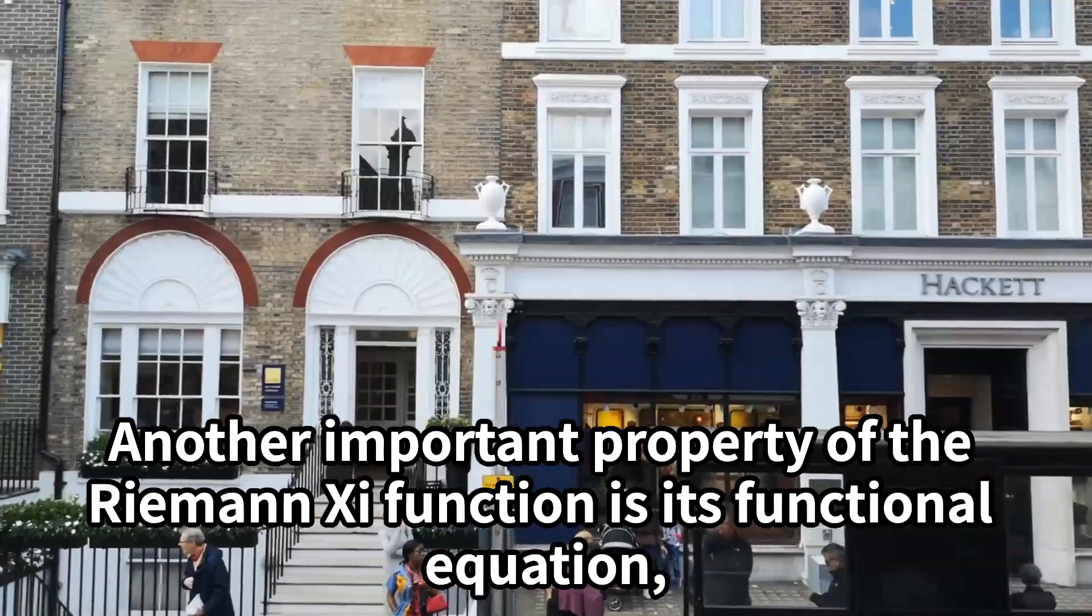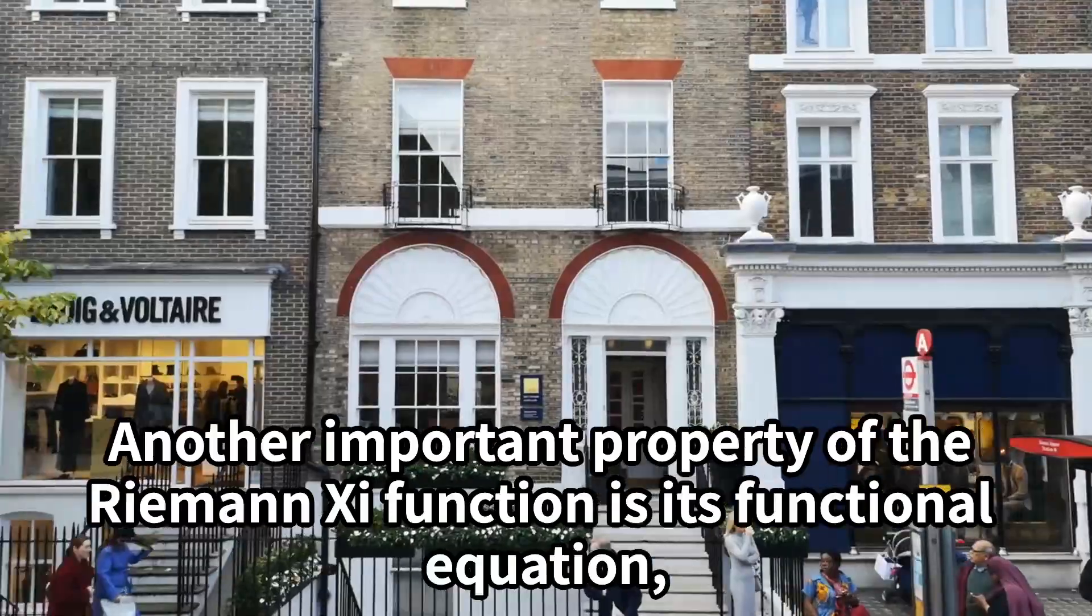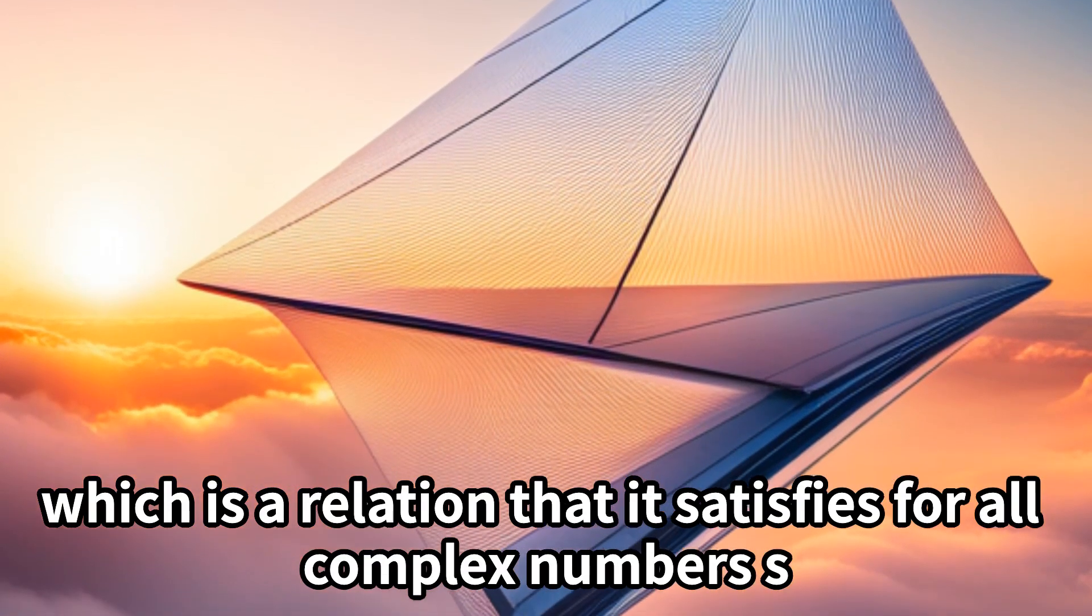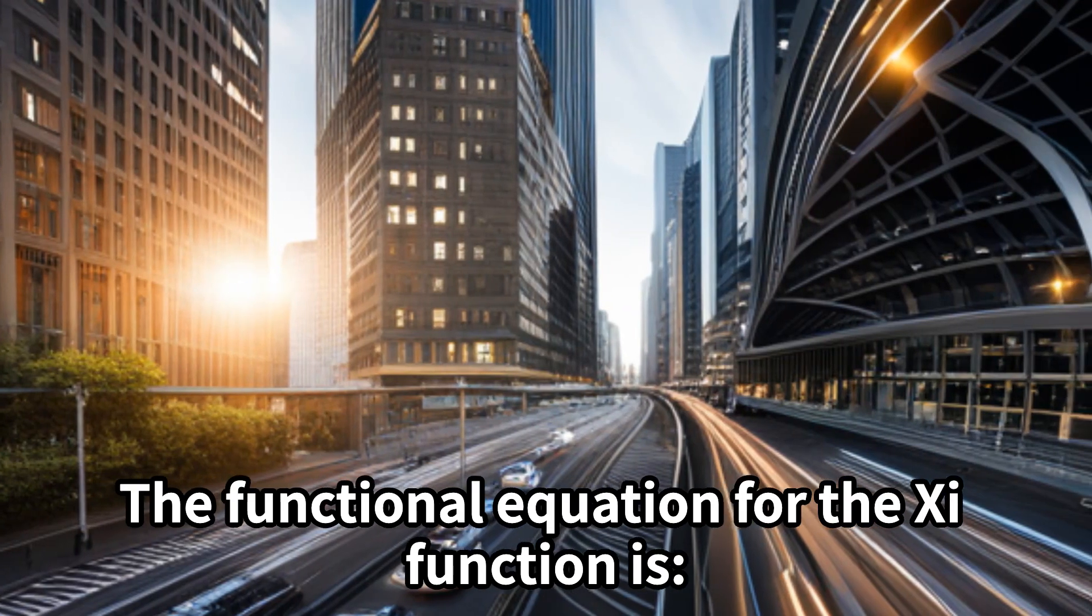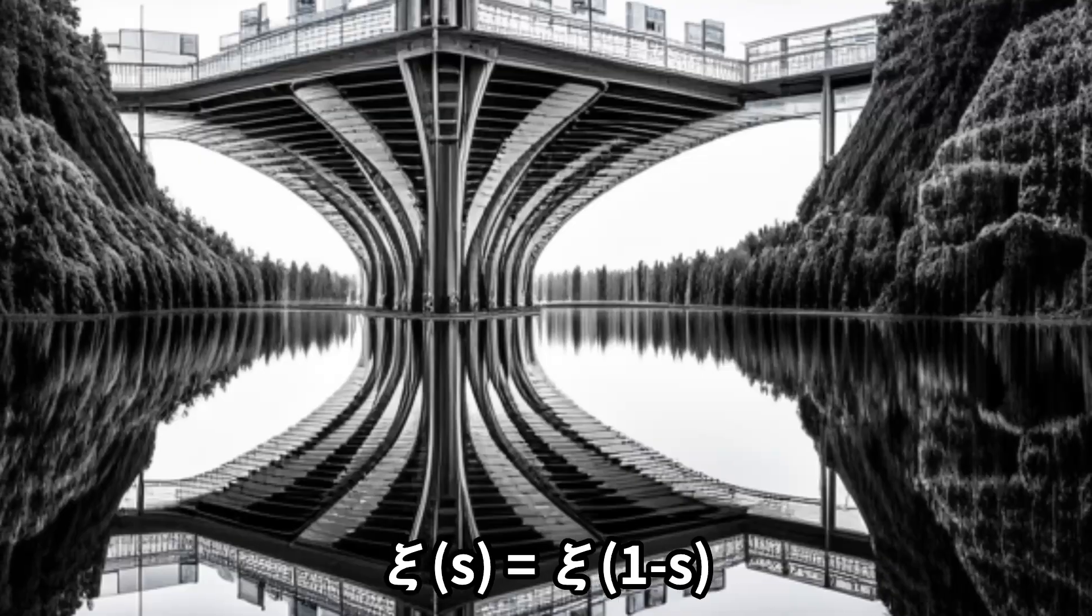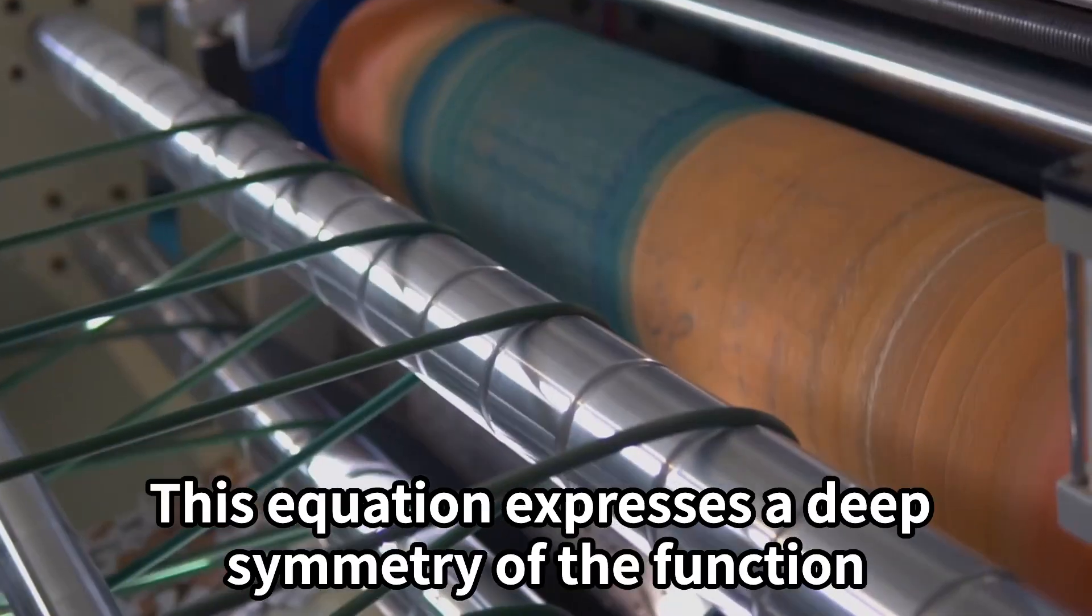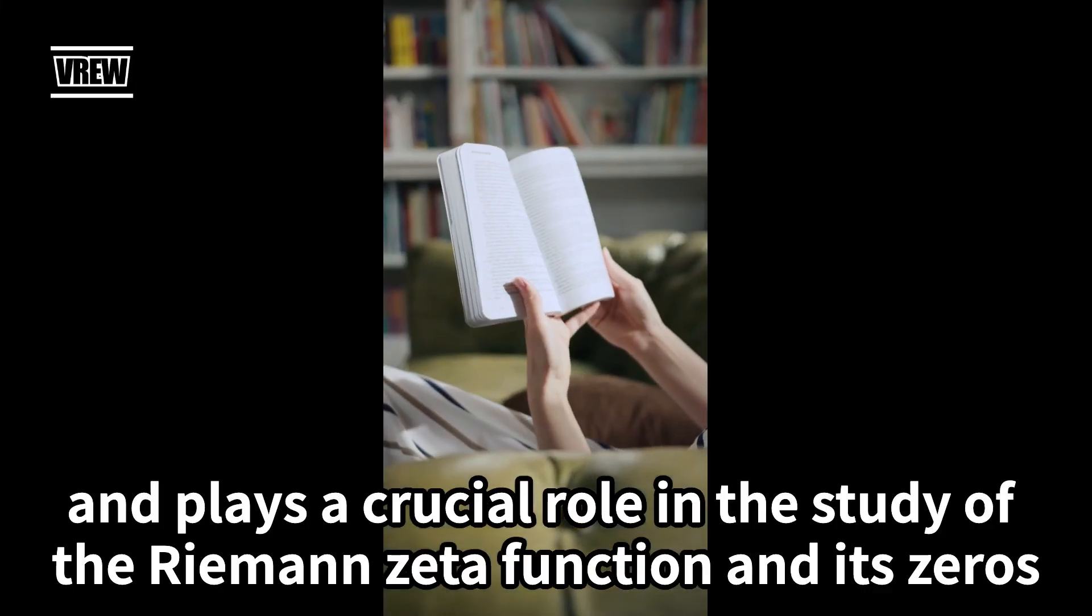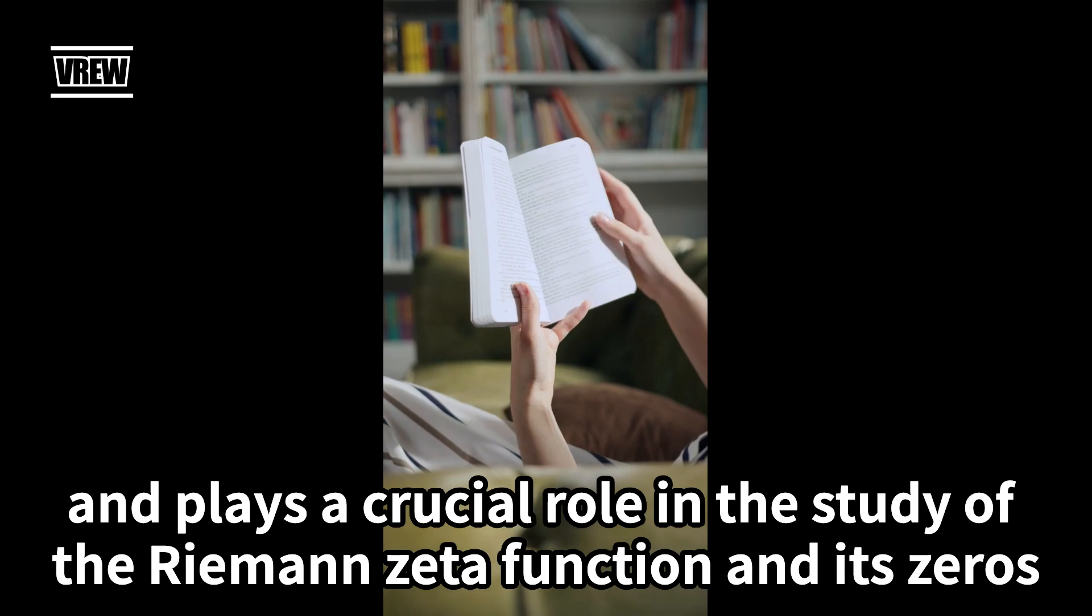Another important property of the Riemann-Chi function is its functional equation, which is a relation that it satisfies for all complex numbers s. The functional equation for the Chi function is ξ(s) = ξ(1-s). This equation expresses a deep symmetry of the function and plays a crucial role in the study of the Riemann-Zeta function and its zeros.